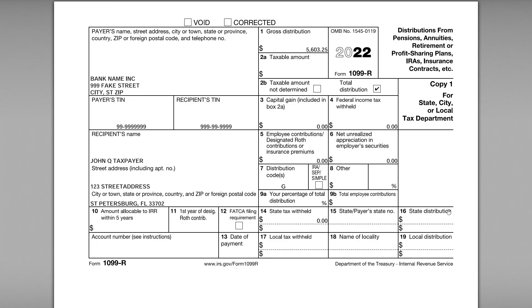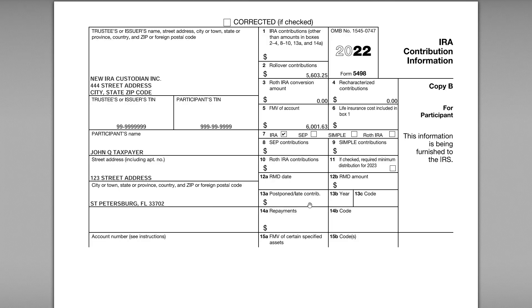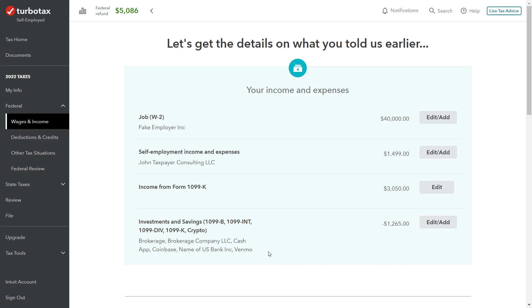In addition, John also receives a Form 5498 from the new IRA custodian. This IRS Form 5498 shows in box two the amount of rollover contributions, and in box seven it's marked IRA — a simple run-of-the-mill traditional IRA. Given this information John has received, how does he complete his return in TurboTax?